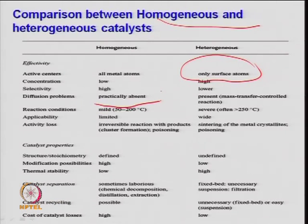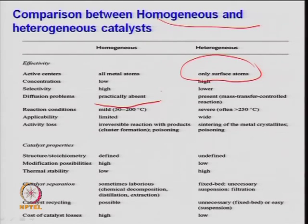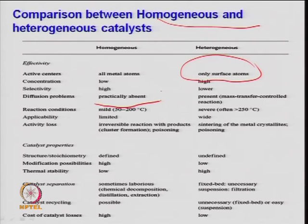Applicability: for homogeneous catalysts, because of their temperature limitations, they are very sensitive to temperatures and thus limited. In heterogeneous catalysts they can be widely used. Heterogeneous catalysts are still widely used in the process industry because of the limitations of homogeneous catalysis. Activity loss: in homogeneous it is mostly irreversible reaction with product, whereas in heterogeneous the activity loss is due to sintering problems — high temperature operation causes sintering, where the concentration of active metal gets agglomerated during reaction.